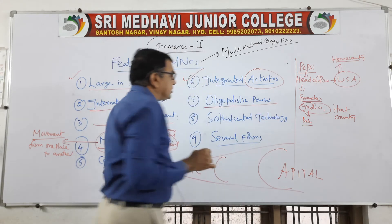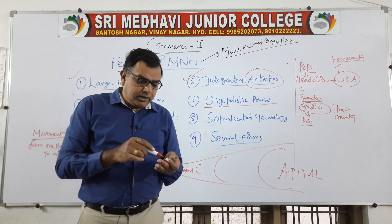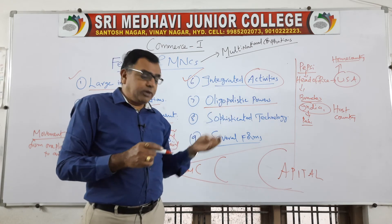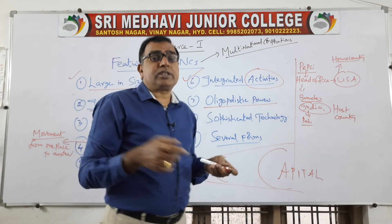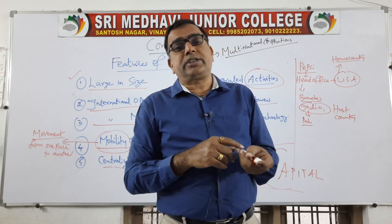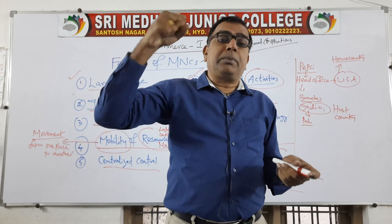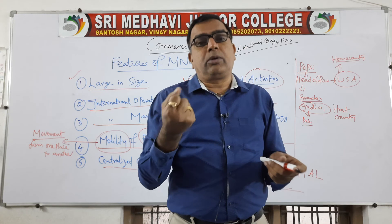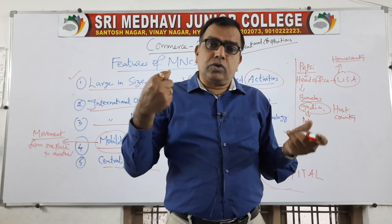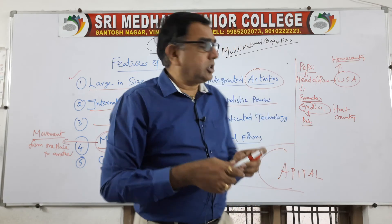Then, oligopolistic powers. In economics you will learn types of market: monopoly, oligopoly, perfect competition. Oligopolistic powers means when economic powers are vested in the hands of only a few persons — that is called oligopoly. Generally, in the entire world market, a few companies are concentrating the economic power and only those people have large quantities of money. So with their powers, they capture the market.